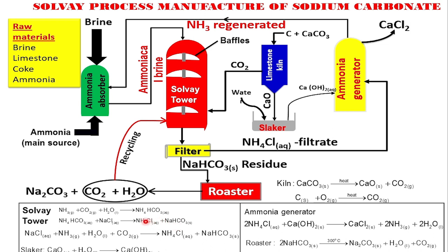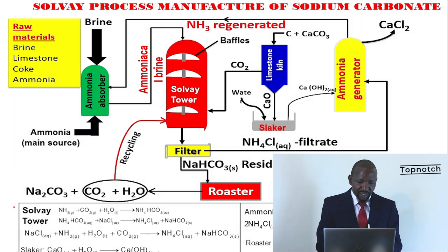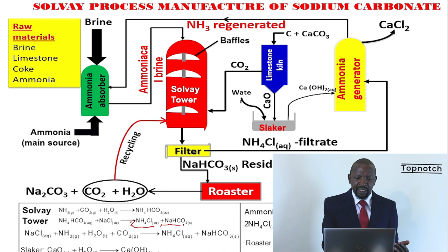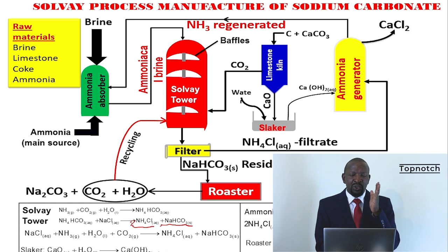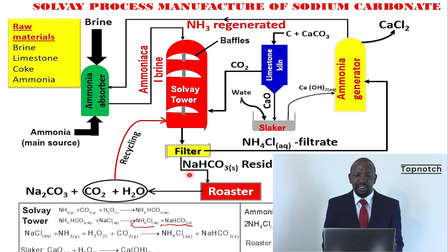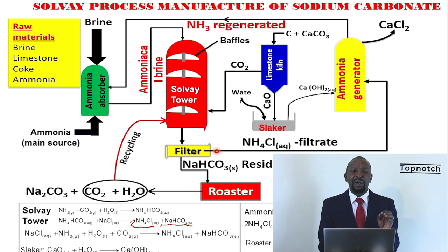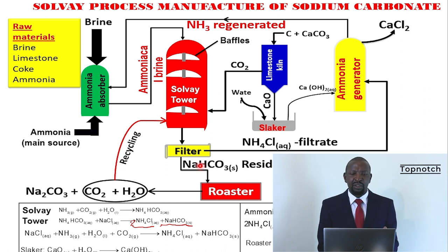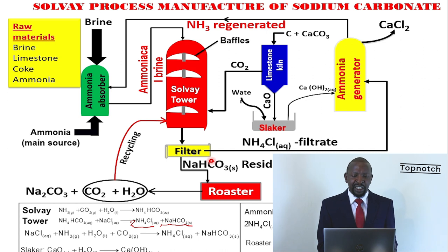When those two are formed, the ammonium chloride is very soluble while sodium hydrogen carbonate is less soluble at the particular temperature of the Solvay tower. The ammonium chloride is in solution (aqueous), while the sodium hydrogen carbonate is insoluble. The main product we require is sodium carbonate, so we have to separate the ammonium chloride and sodium hydrogen carbonate by filtration. Once we filter, we get sodium hydrogen carbonate as the residue and ammonium chloride as the filtrate. The sodium hydrogen carbonate residue is taken to the roaster.